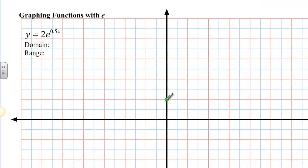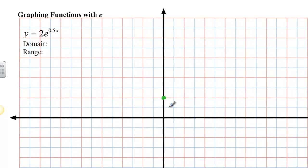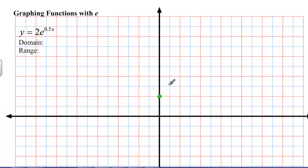We already got our 0, 2. And then my other points were 1, 3.3. Make that point there. And then we got 2, 5.4. So that's about right there. And then we got 3, 8.96. So 8 point, let's see, 2, 4, 6, 8.96. So almost to 9. And then we also got our negatives. Negative 1, 1.21 right there. Negative 2, 0.74 right there. Negative 3, 0.45 right about there. And then you also have negative 4.27.